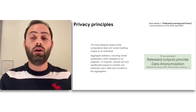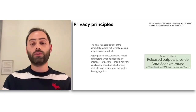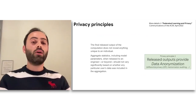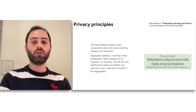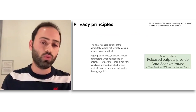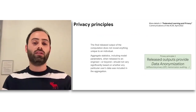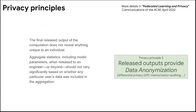Moving on, we can talk about the third privacy principle, which is data anonymization. This is about making sure that the output of any computation — especially when we train these foundation models — does not reveal anything unique to an individual. We care about aggregate statistics including model parameters, and we want to be able to release them, but we want to make sure they do not vary significantly based on whether or not any particular user's data was included during training. That's the principle.